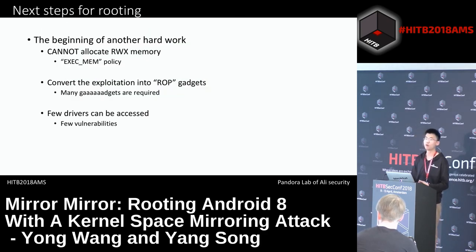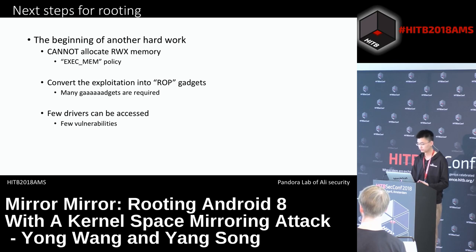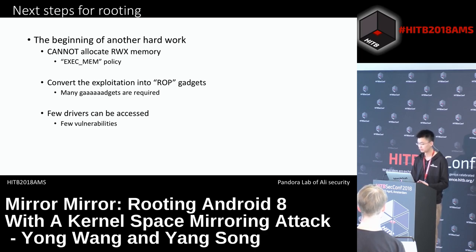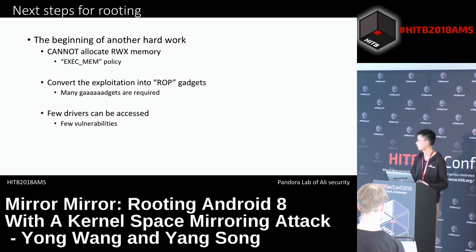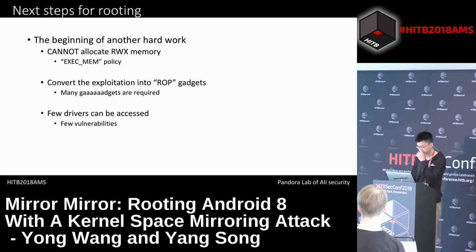Now one thread of media server is controlled. However, it's just the beginning of another hard work for rooting. Due to the exact memory policy, the thread can't allocate RWX memory for shellcode, meaning the exploitation code for stage 2 must be rewritten as ROP chains, requiring many gadgets. And we still have very few drivers that can be accessed. So you can see that a vulnerability in a generic syscall is attractive. Let me detail a routing solution based on such a vulnerability.